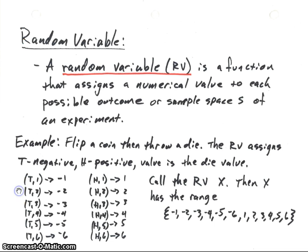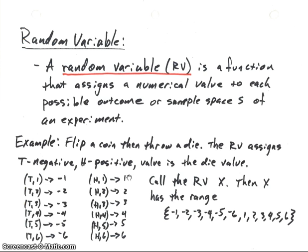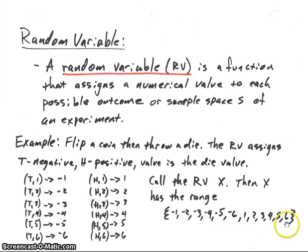The outcomes are: tails and 1, tails and 2, and so on, then heads and 1, heads and 2, all the way down to heads and 6. We're going to assign numerical values: tails and 1 becomes negative 1, tails and 2 becomes negative 2, and so on. For the heads, it will be positive values — 1, 2, and so on. So our random variable, which we'll call X (capital letter X), has range values: minus 1, minus 2, minus 3 through minus 6, and 1, 2, 3, 4, 5, 6.